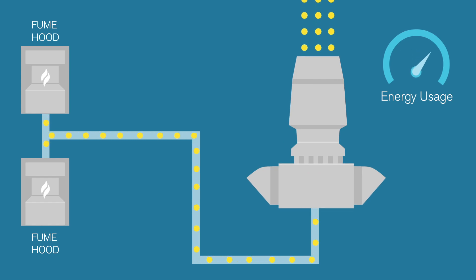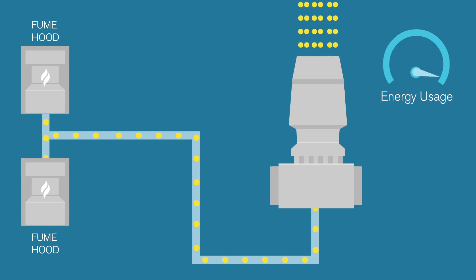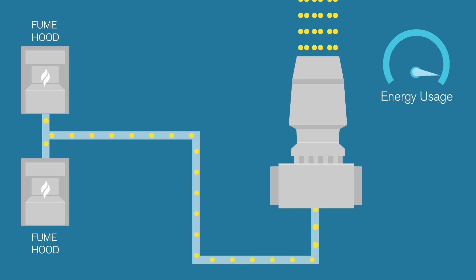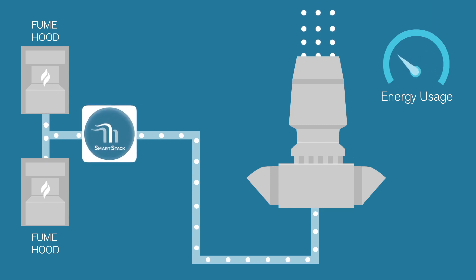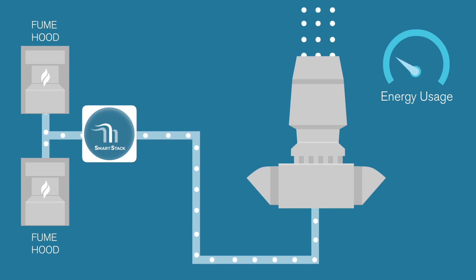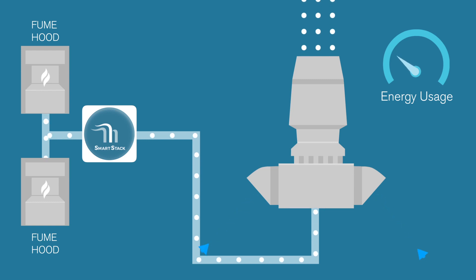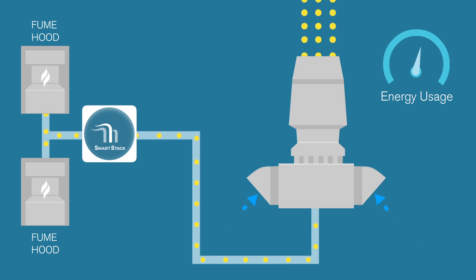Some exhaust fan systems do not have a damper to add bypass air. This can limit the amount by which lab air change rates can be reduced as part of a lab energy conservation measure, because large reductions in lab exhaust can result in unsafe fan exit velocities. This is easily addressed by adding SmartStack and a bypass damper to the exhaust fan system. This simple upgrade enables the lab flows to be safely reduced while generating large energy savings. With SmartStack, bypass air will be added when lab exhaust is contaminated, ensuring proper fan exit velocities.